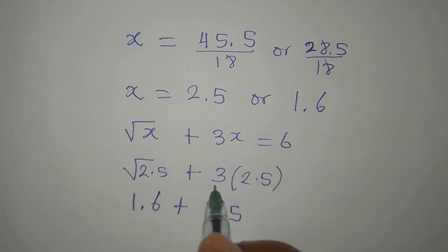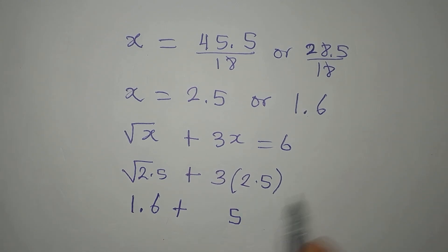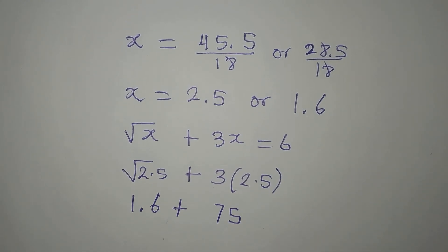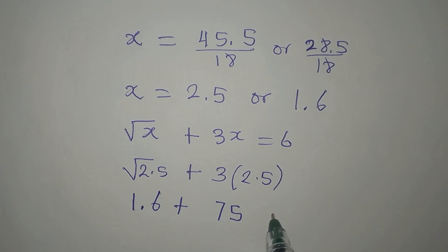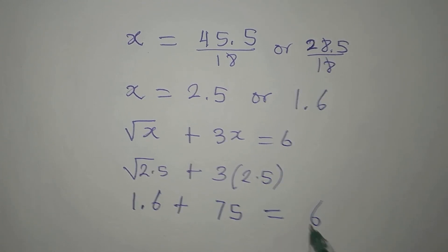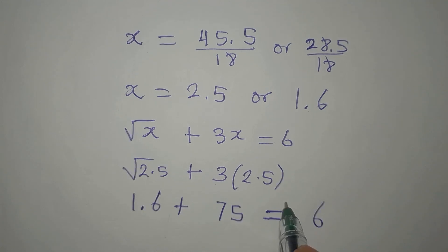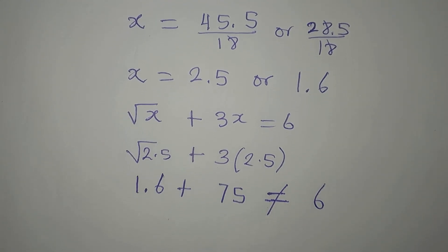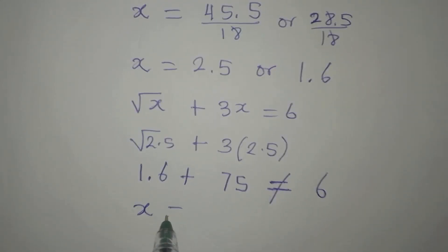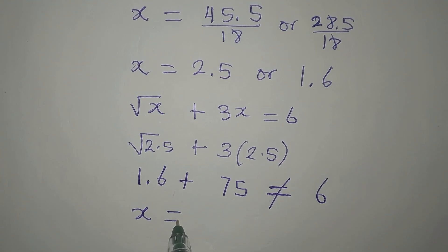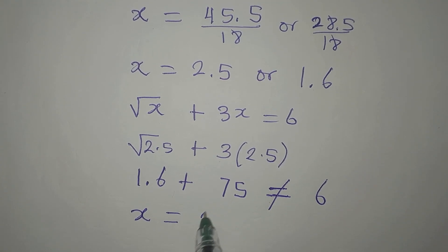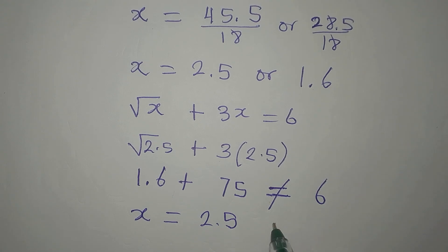Then 3 times 2 is 6 plus that one, 7. Now, when you add this, it will not give 6. Okay, so this means that this is not equal to 6. Therefore, our x equals 2.5 is not satisfying.